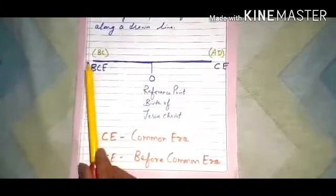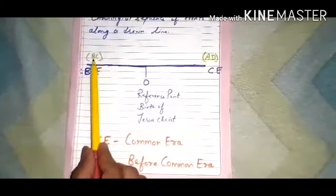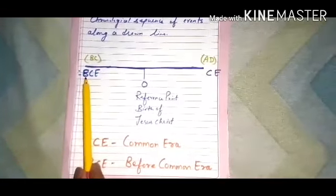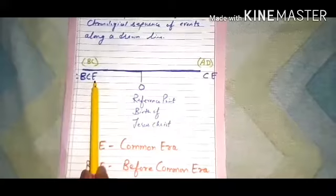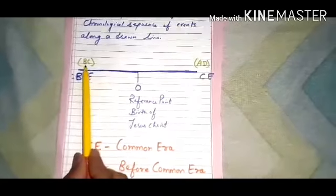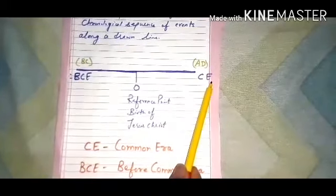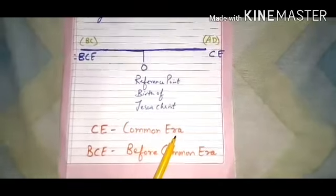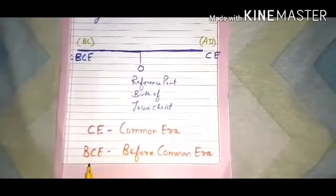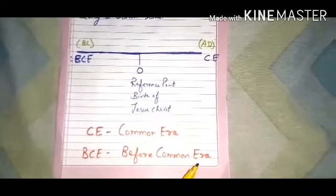Nowadays, historians use the letter BCE instead of BC, and CE instead of AD. Here CE stands for Common Era and BCE stands for Before Common Era.